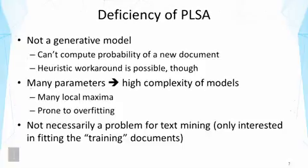Secondly, it has many parameters. I've asked you to compute how many parameters exactly there are in PLSA, and you will see there are many parameters. That means the model is very complex, and that also means there are many local maxima and it's prone to overfitting. That means it's very hard to find a good local maximum that really represents a global maximum.